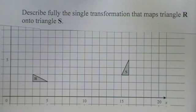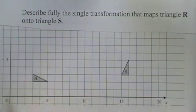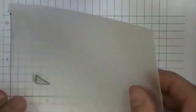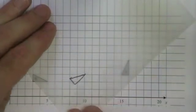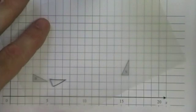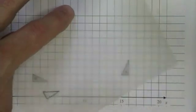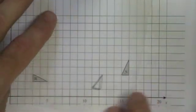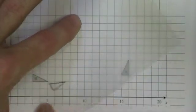Let's try another rotation. This time describe fully the single transformation that maps triangle R onto triangle S. Obviously this is a rotation video so we know this is going to be a rotation, but let's just check it. So there is triangle R. If I rotate it, it's going to go and that is a 90 degree rotation from R, 90 degrees to S.